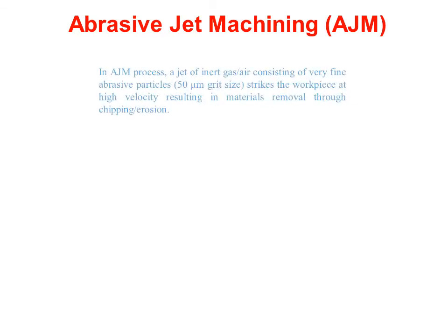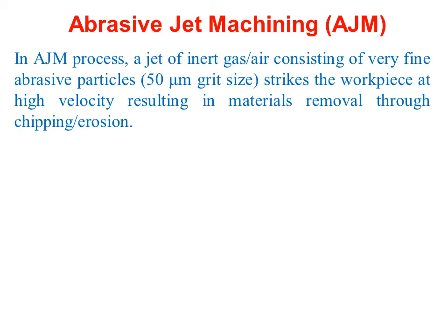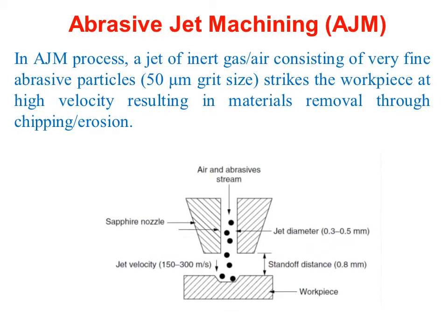What is the abrasive jet machining process? In the AJM process, a jet of inert gas or air consisting of very fine abrasive particles of 50 micron grit size strikes the workpiece at high velocity, resulting in material removal through chipping or erosion.